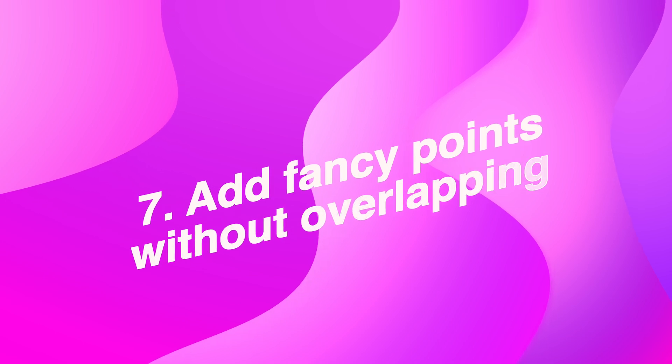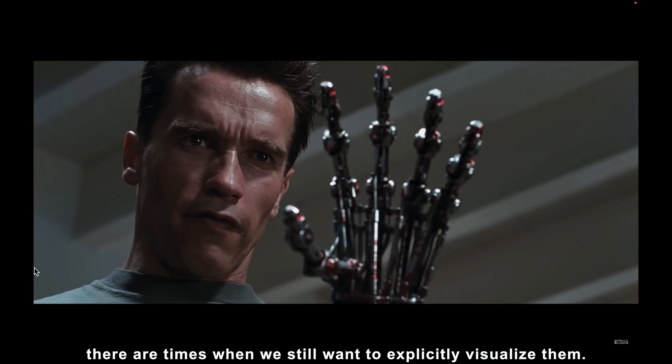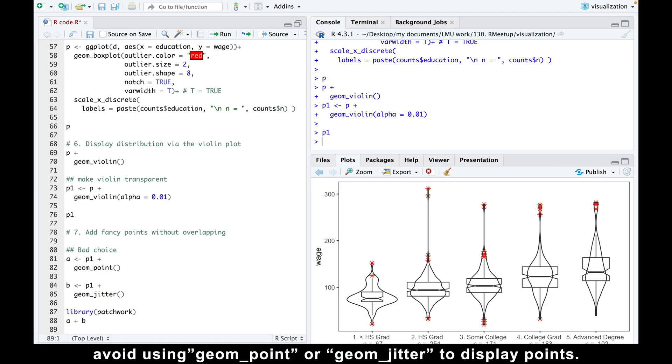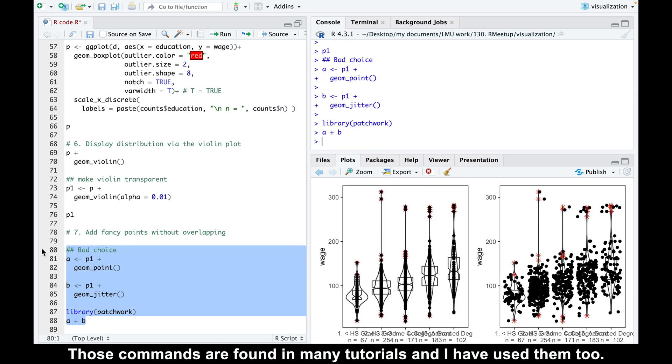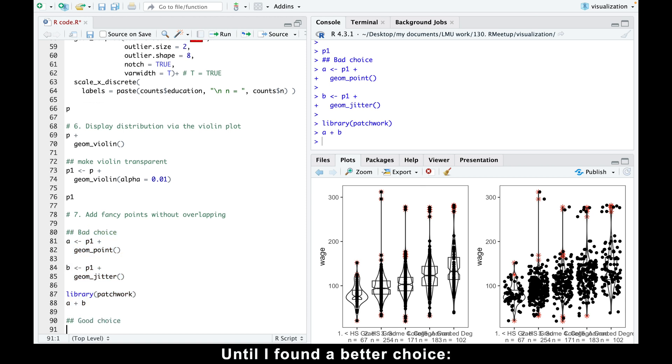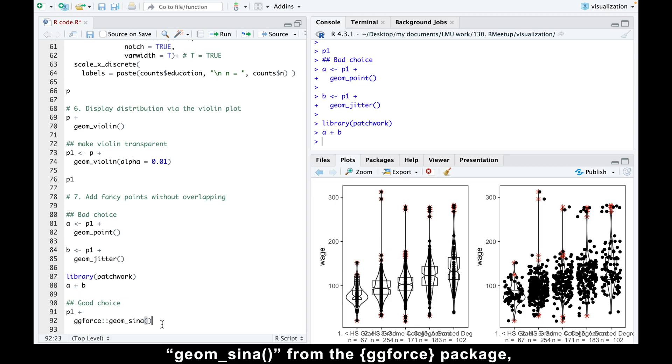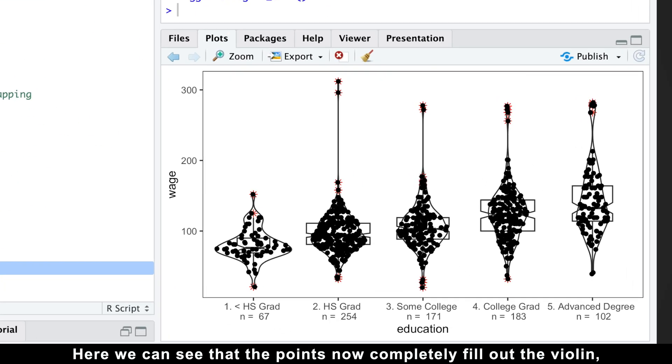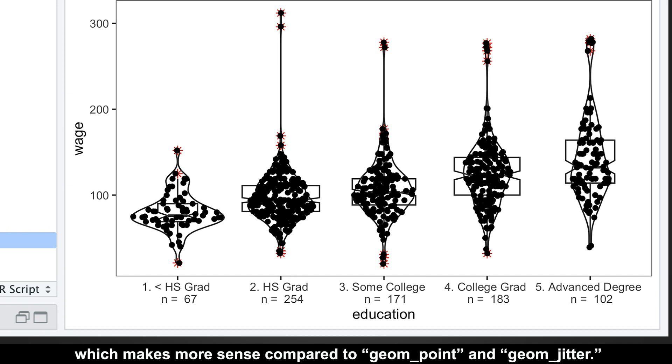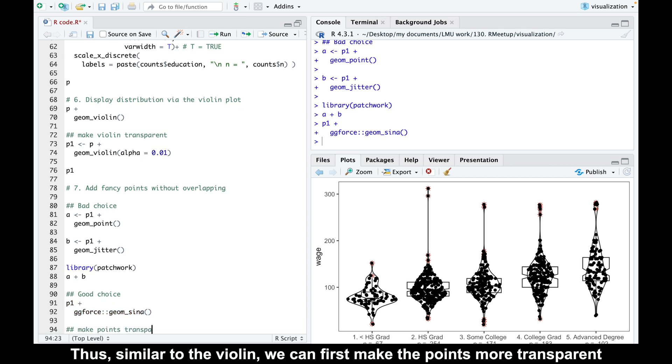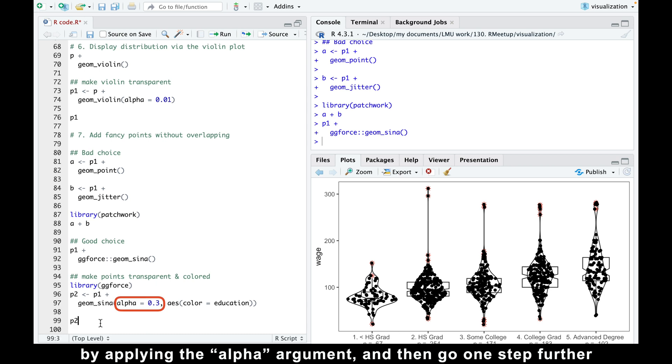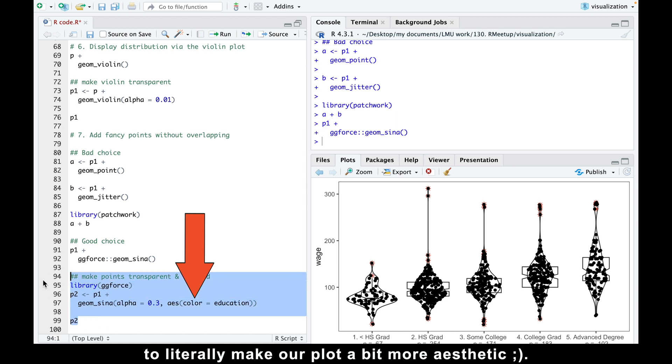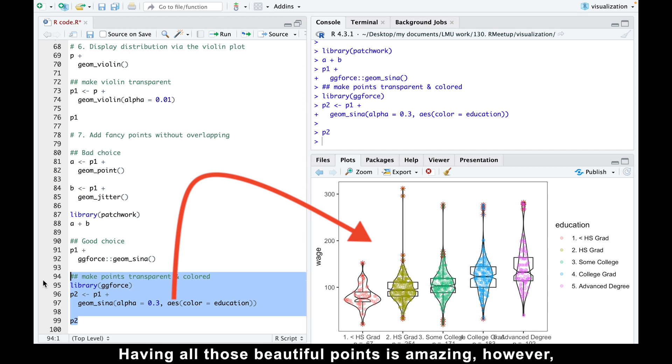Avoid using geom_point and geom_jitter to display points. Those commands are found in many tutorials, and I have used them too, until I found a much better choice. geom_sina from the ggforce package, where Sina stands for strength, victory, and beauty. Here we can see that the points now completely fill out the violin, which makes more sense compared to geom_point or geom_jitter. However, they completely overshadow the boxplot. Thus, similar to the violin, we can first make the points more transparent by applying the alpha argument, and then go one step further and paint them in different colors to literally make our plot a bit more aesthetic.